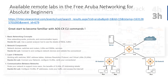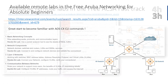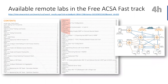Next, there is another course more specific to the Aruba Certified Switching Associate certification. It's called ACSA Fast Track, and it comes with a PDF document and remote access to four hours of labs. That's really great because you will be able to discover and try CLI commands and configure the different steps required for that certification, covering layer two, layer three, etc.